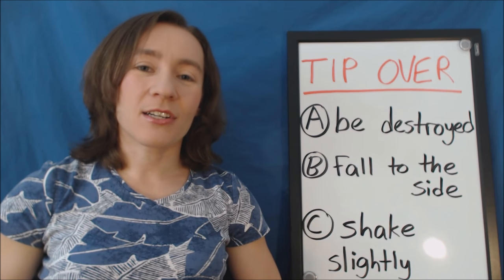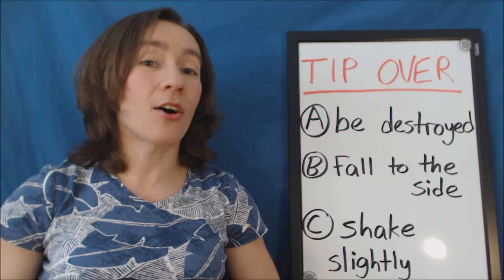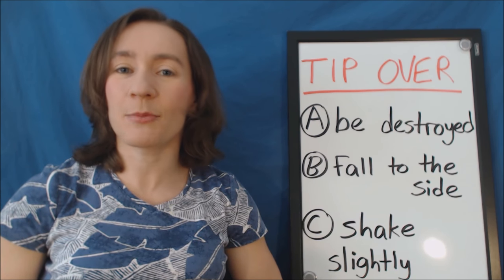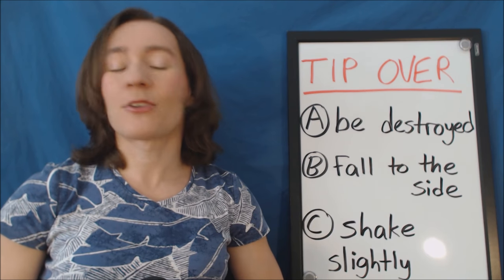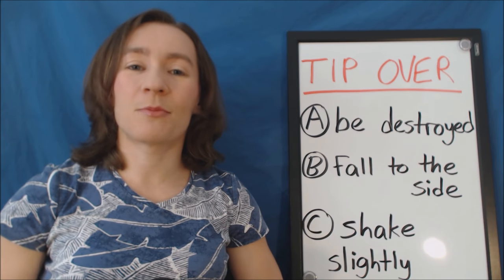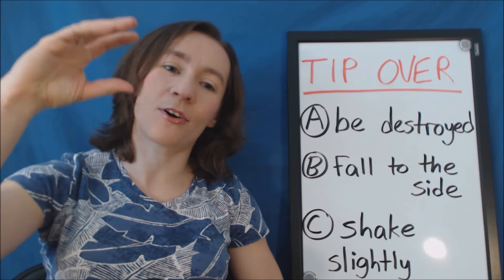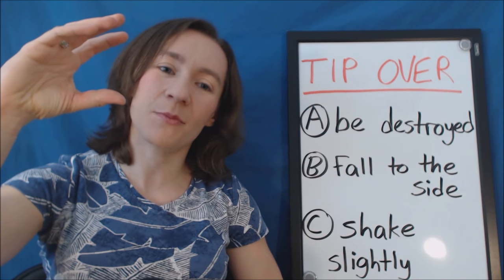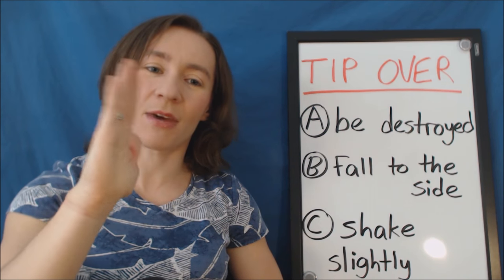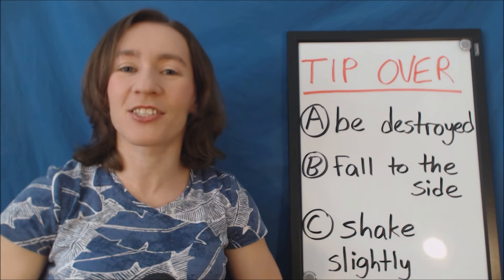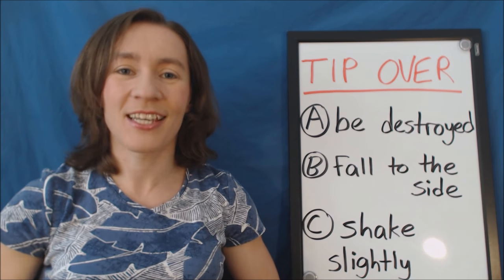Tip over can be used when there's an impact, but it can also be used when the object tips over by itself. So another example would be if I'm making a stack of books and I put a really heavy book on the top, then that stack of books might tip over — it might fall to the side by itself.